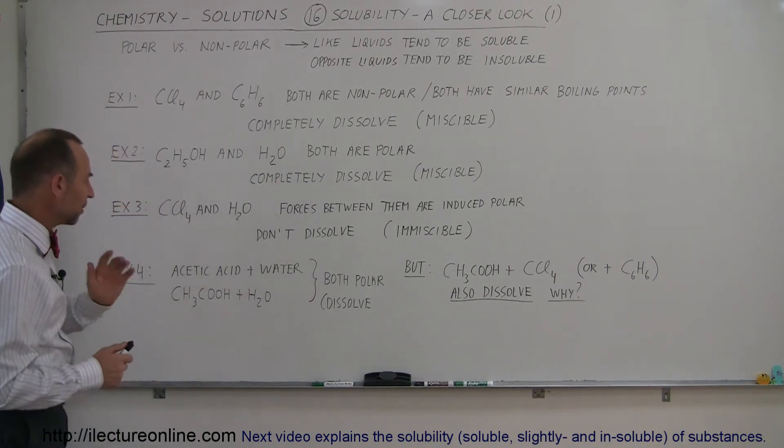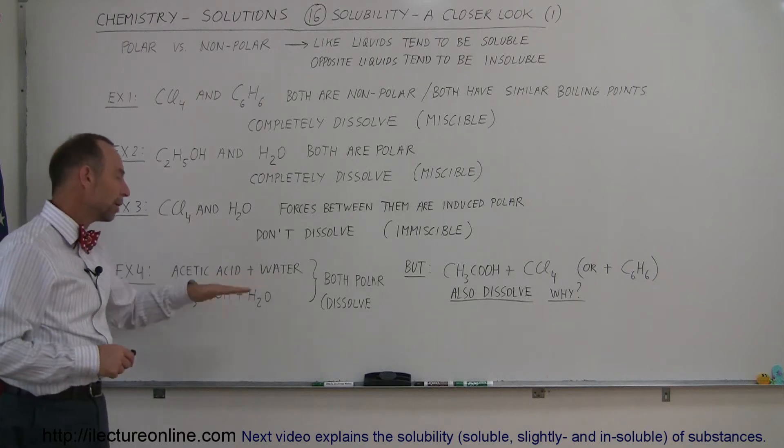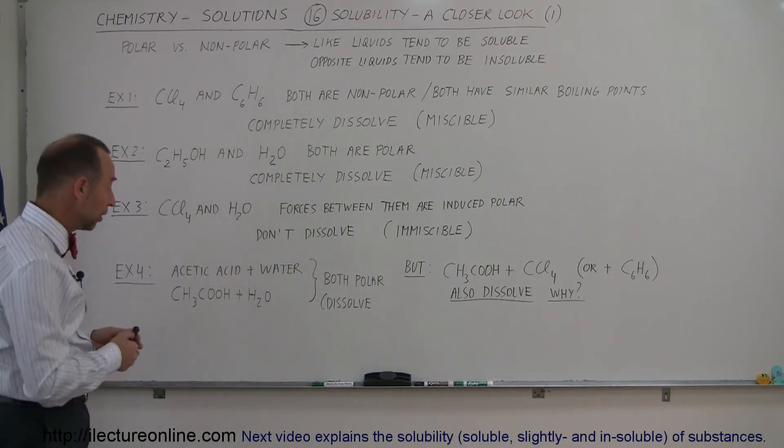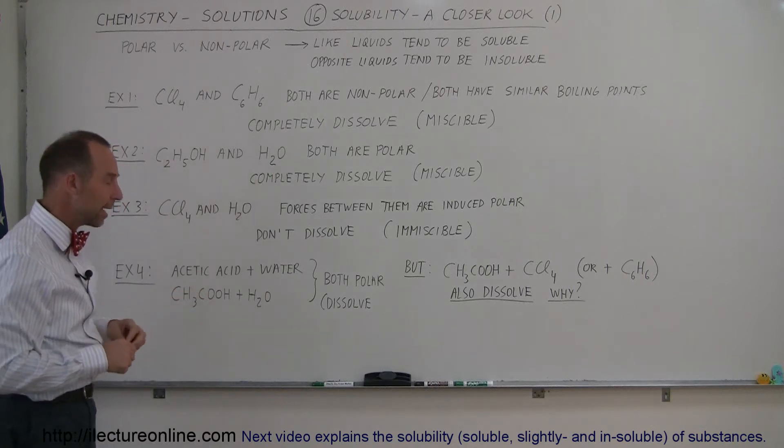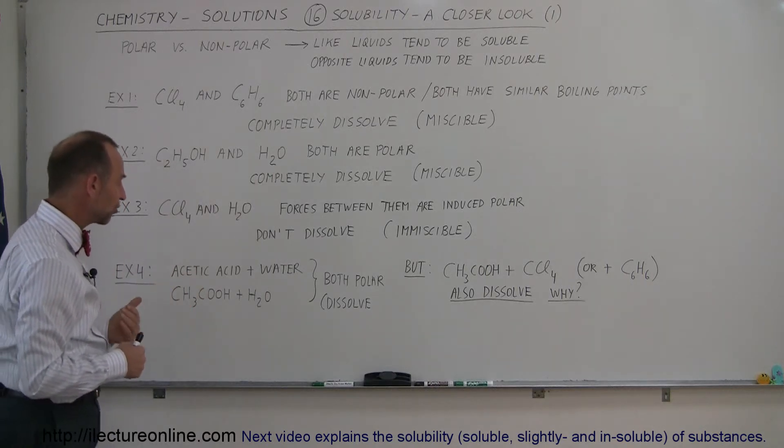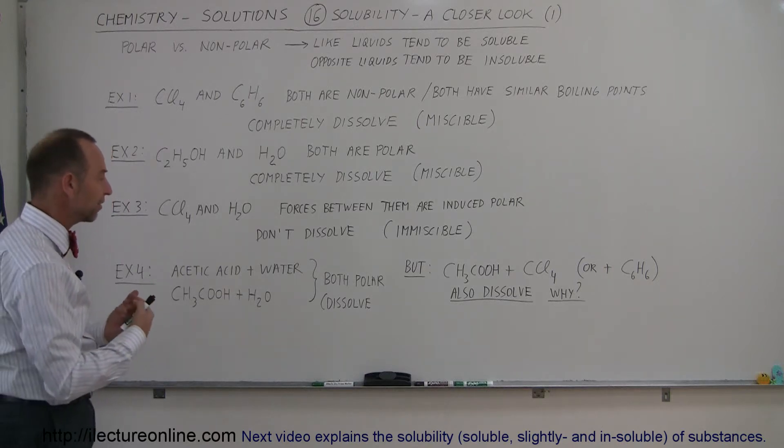So there are some exceptions. Let me show you why. Let's take acetic acid and water. Now, they're both polar molecules. Acetic acid will shed one of the hydrogens, become an ion, and there'll be a lot of attraction between acetic acid and water. And so there's a lot of strong bonding there. And yes, they do dissolve.